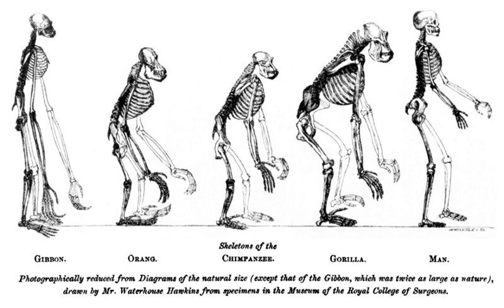Charles Darwin discussed how selective breeding had been successful in producing change over time in his 1859 book On the Origin of Species. Its first chapter discusses selective breeding and domestication of such animals as pigeons, cats, cattle, and dogs. Darwin used artificial selection as a springboard to introduce and support the theory of natural selection. The deliberate exploitation of selective breeding to produce desired results has become very common in agriculture and experimental biology.